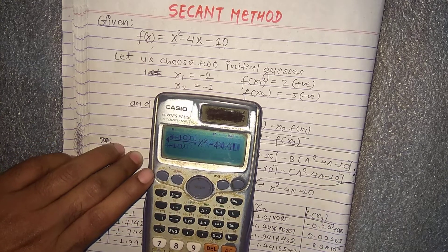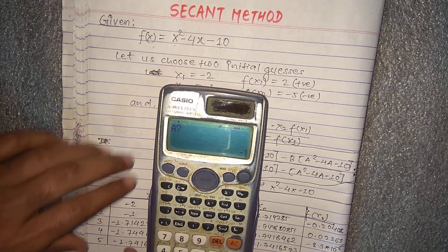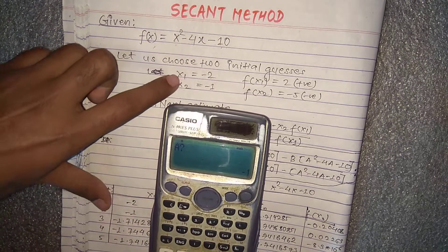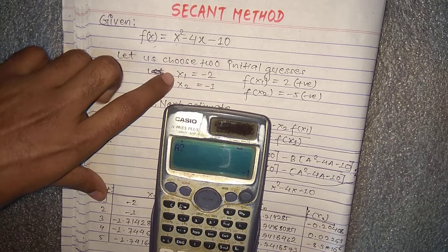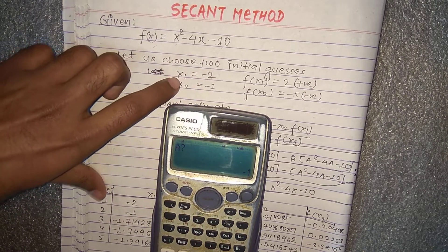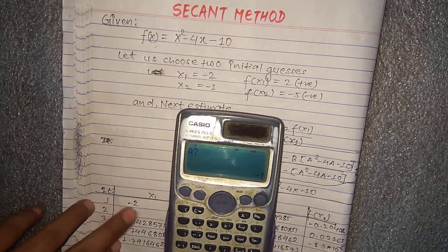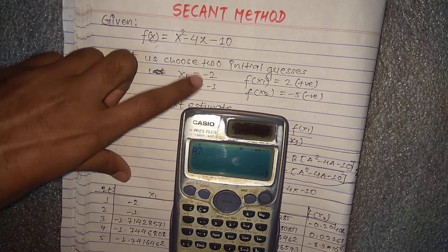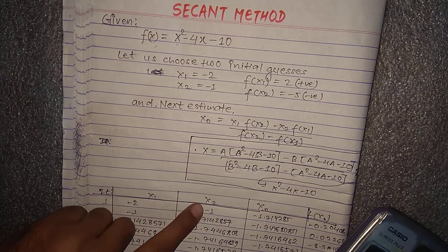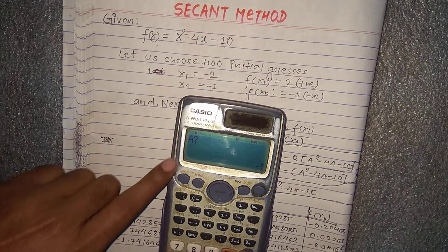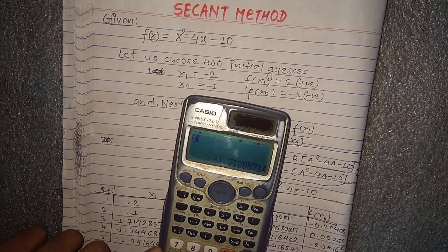Then press CALC. For the initial guesses, x1 equals minus 2 and x2 equals minus 1, so the root lies between minus 2 and minus 1. In place of a we enter minus 2, and in place of b we enter minus 1.